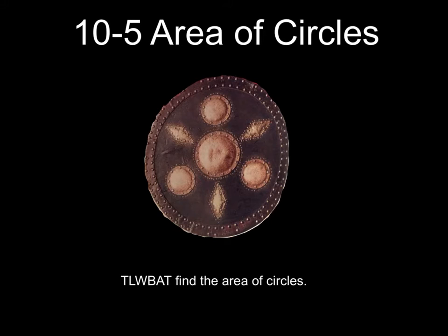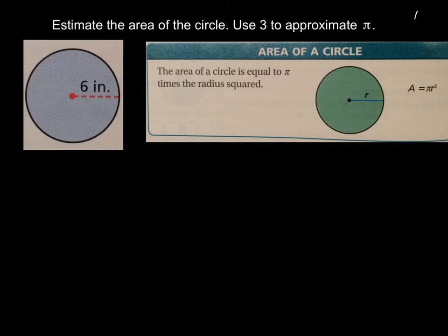Luckily a guy named Archimedes came up with the formula that the area of a circle equals pi r squared. So let's talk about how to do this. Here's another formula to add to your formula page, how to find the area of a circle, and that is right here, pi r squared.